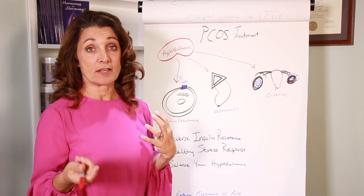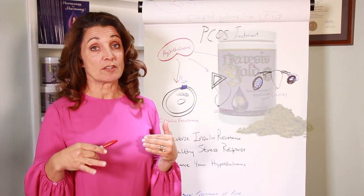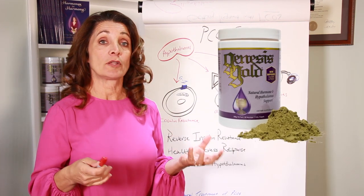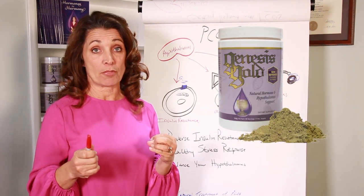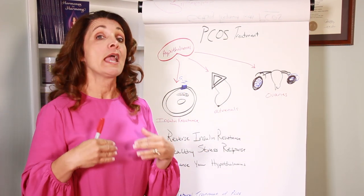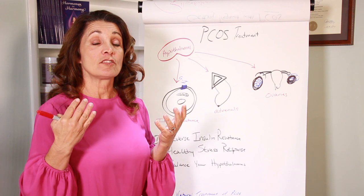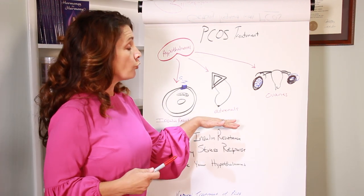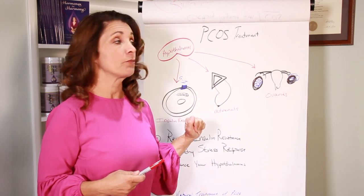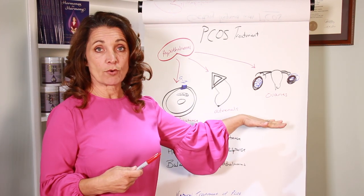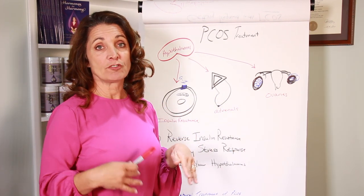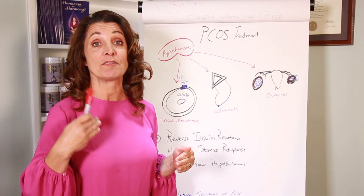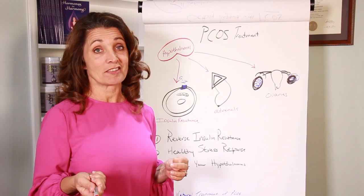Balancing the hypothalamus is not difficult to do. I developed Genesis Gold to do this particularly. The amino acid blend in Genesis Gold is designed to balance the hypothalamus. The rest of the herbal blend and the super green foods is to support normal insulin sensitivity, normal adrenal stress response, and reproductive hormones. I've had many patients with polycystic ovary syndrome completely reverse the syndrome and even get pregnant using Genesis Gold.